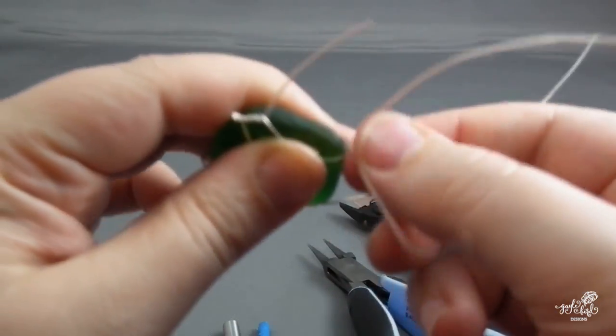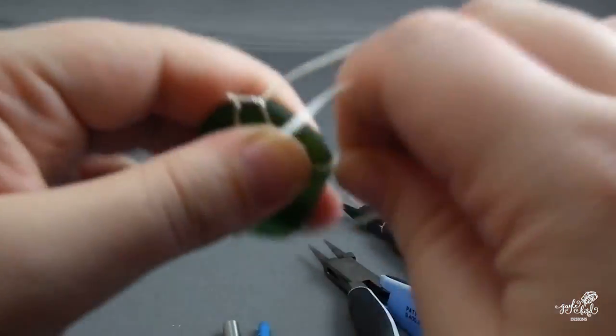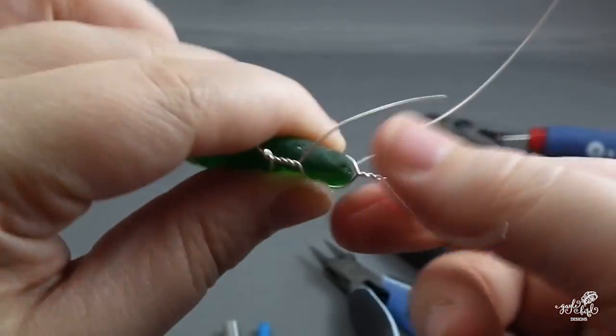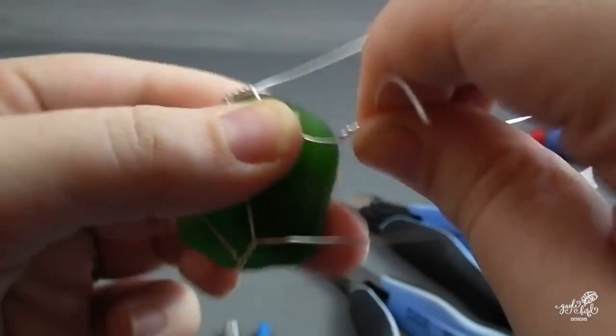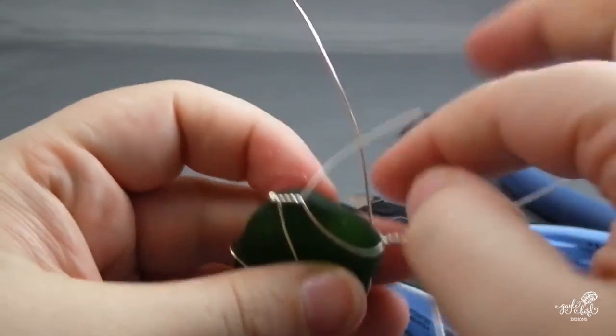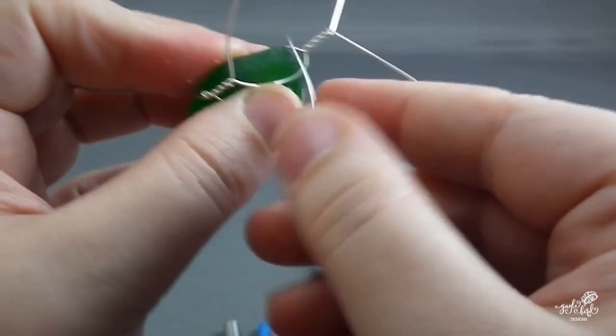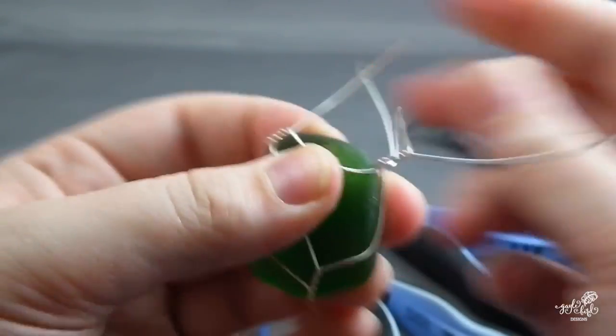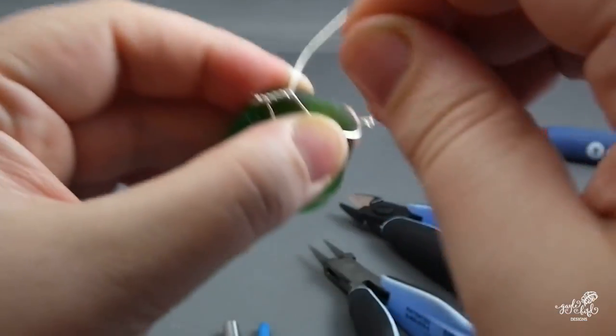Keep twisting on opposite sides of your stone until you reach the top. Then take a wire from the front and one from the opposite side on the back and twist those at the top in the center to start the bail. Pull any remaining wires around the stone and wrap them around the bail twist at the top.